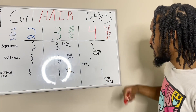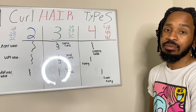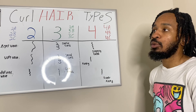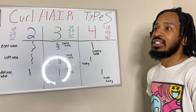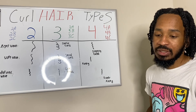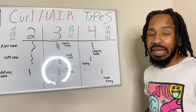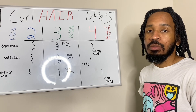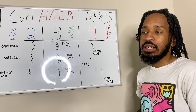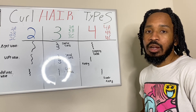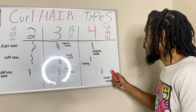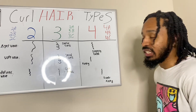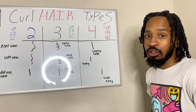Super kinky — that's 4C. That's what people like to use those horrible terms like "nappy" to describe. We don't use those terms. Let's be better. Super kinky type 4C is the correct term.